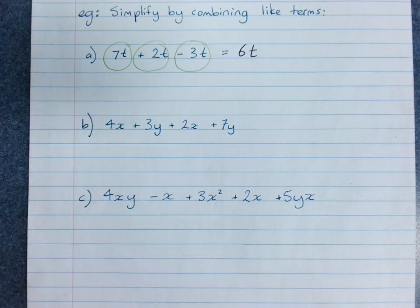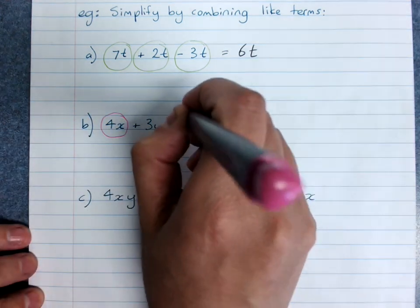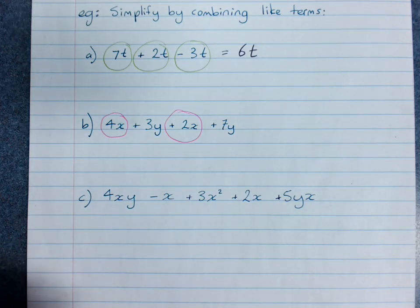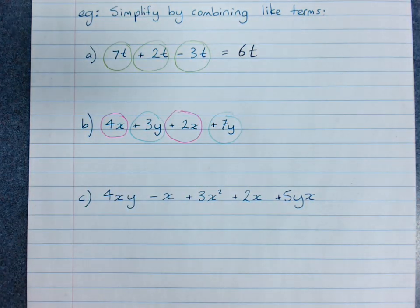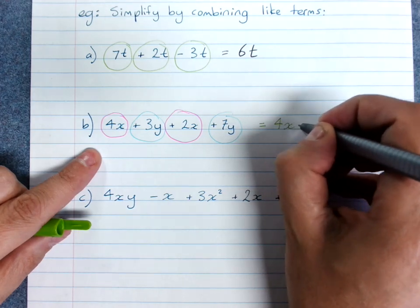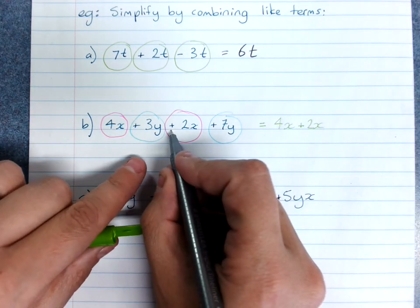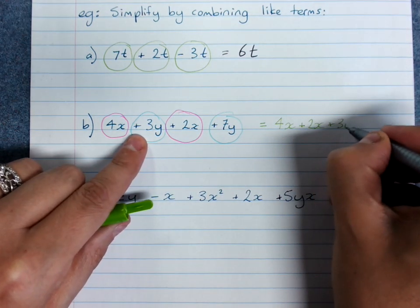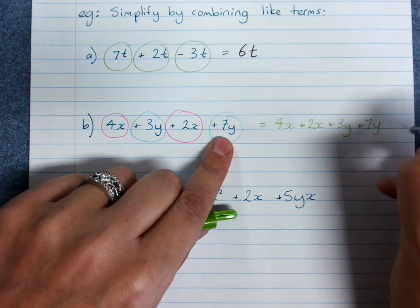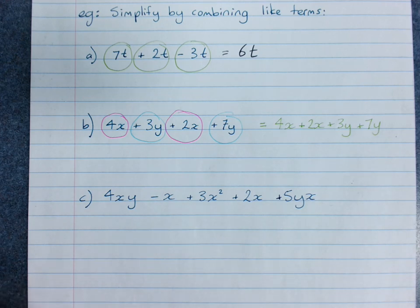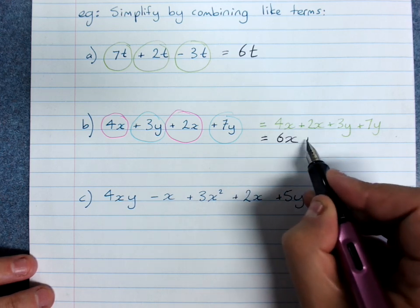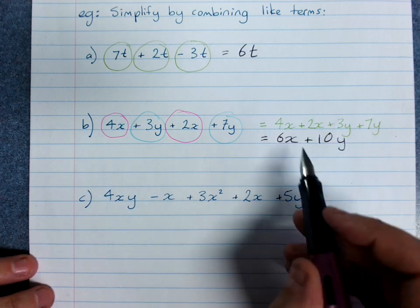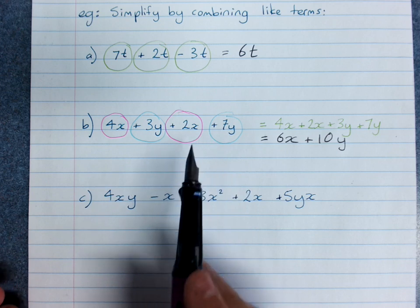It is a good idea to identify your like terms. 4x plus 2x - those are like terms. Plus 3y and plus 7y - those are like terms. If you want, now this is an optional line here so I'll put it in green, you can rearrange to say I've got 4x plus 2x (keep the sign with the thing that comes after it) plus 3y plus 7y. That's an optional line. Then it's very easy to get 4x plus 2x is 6x, plus 3y plus 7y is 10y. We're just adding or subtracting the like terms.